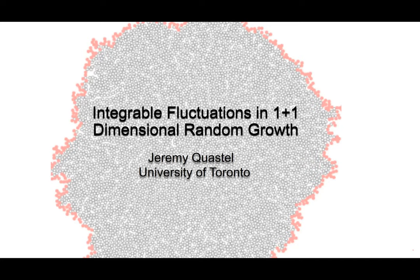The model you see in front of you is an off-lattice Eden model. You've got a cluster growing; particles which are neighbor to the cluster are joining at rate one, and you can see the pink ones are the ones that just joined. You can think of this as a model of something like a bacterial colony, a tumor, or perhaps people who are not social distancing.